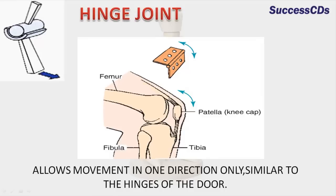Hinge joint. This joint allows movement in one direction only, similar to the hinges of a door. Examples include the elbow joint between the upper and the lower arm, the knee joint between the thigh and the lower leg, and the wrist joint between the forearm and the wrist.